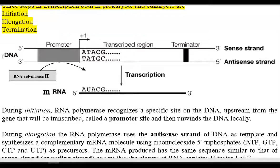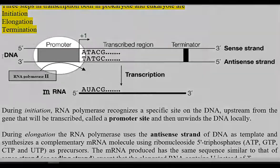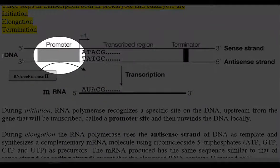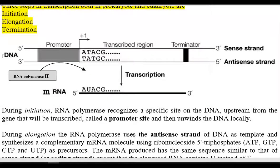Now, let us look at initiation. RNA polymerase recognizes a specific site on the DNA upstream of the gene that is being transcribed. Upstream means it is present on the left-hand side of the transcribed region. That particular region is where the RNA polymerase first attaches and starts the transcription process. That attaching place is referred to as the promoter binding site. In this region, the DNA locally unwinds, which allows the binding of RNA polymerase to the promoter.